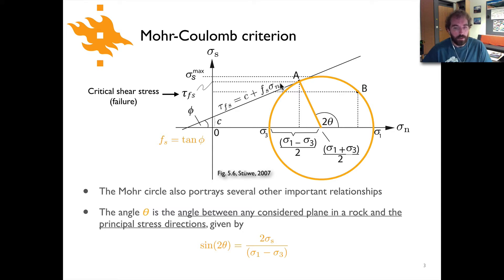One of the interesting things that we can observe here has to do with this angle theta. So you can see there's an angle here labeled 2 theta that goes between this line here where we have reached the failure criterion and the horizontal of the normal stress axis. That angle actually tells us the angle between any plane we consider in the rock and the principal stress directions.